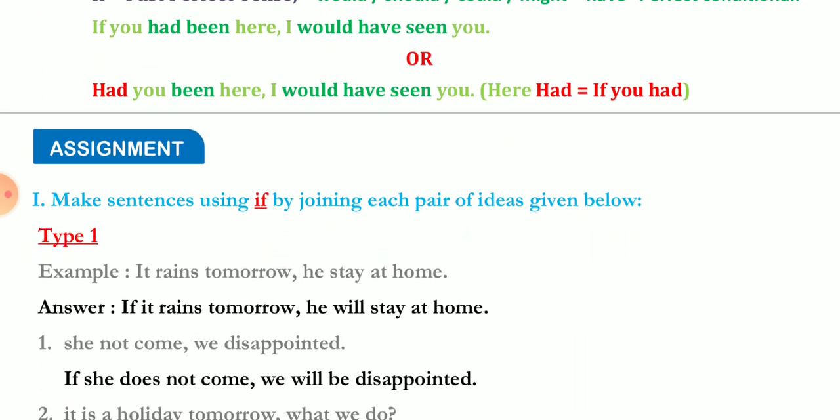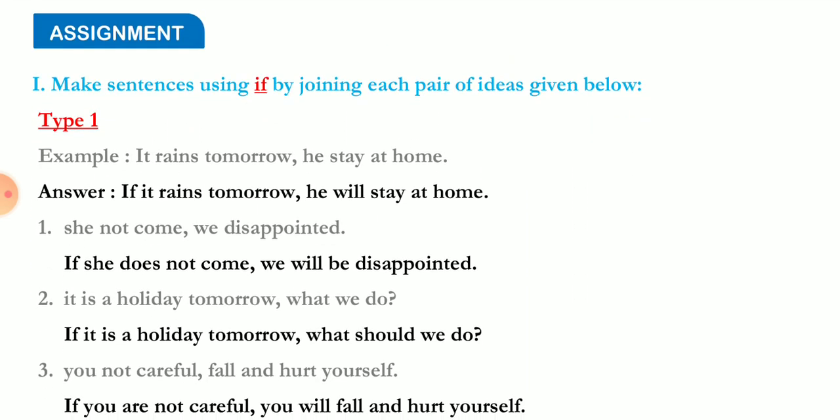Here is the assignment from our Total English book. Complete it with a black or blue pen — make sentences using 'if' by joining each pair of ideas given. Type 1 example: 'It rains tomorrow / he stays at home.' Answer: 'If it rains tomorrow, he will stay at home.' The if-clause is in present tense and the second sentence is in future tense — that is Type 1.